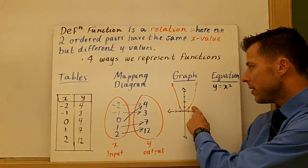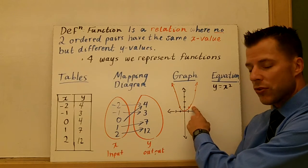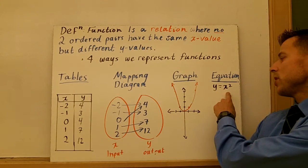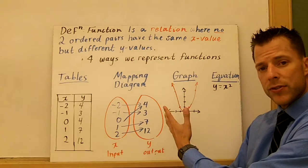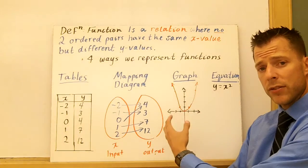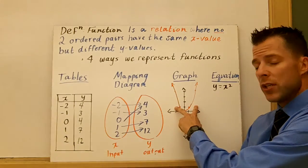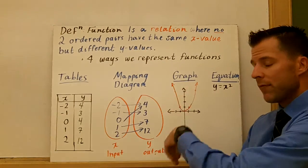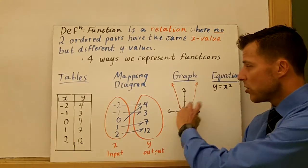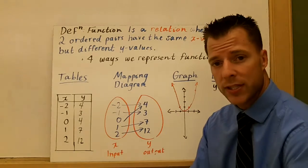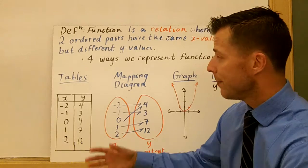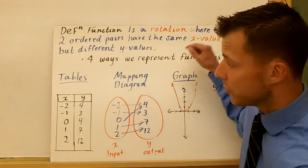So you don't see two arrows going from any of these input values. A quick graph. Here is the just graph of y equals x squared and I wrote it as an equation. Polynomials are going to be functions. Any polynomial we talk about, linear quadratic cubic. And you can easily tell that by if the graph passes the vertical line test. So those are four ways that we represent functions. And now we're going to look at some examples where we have to determine if the relation is actually a function.